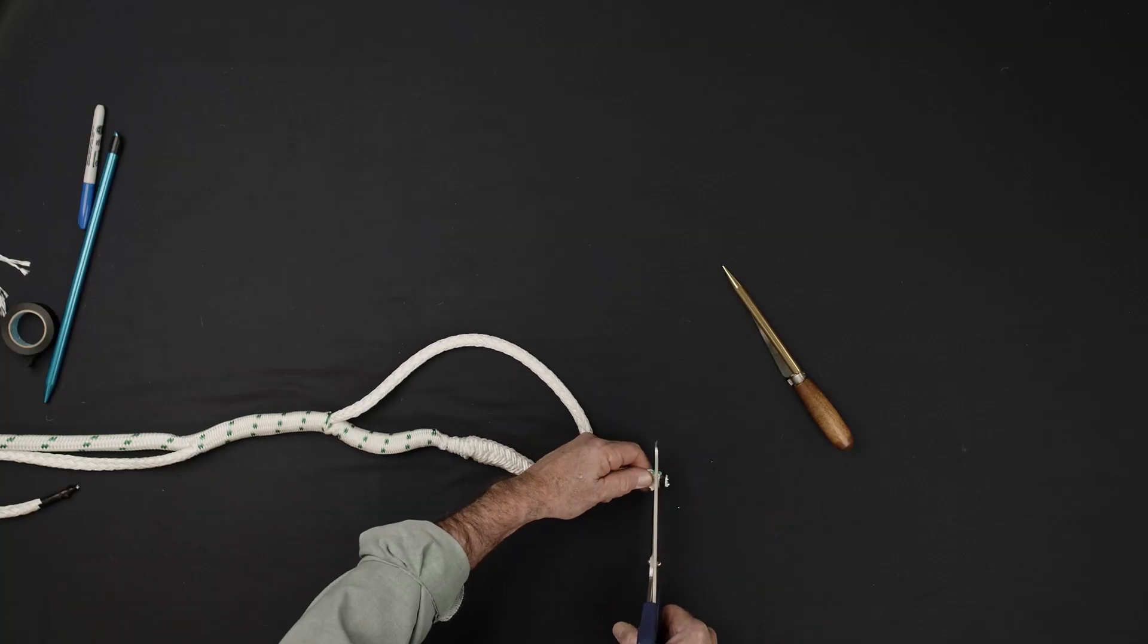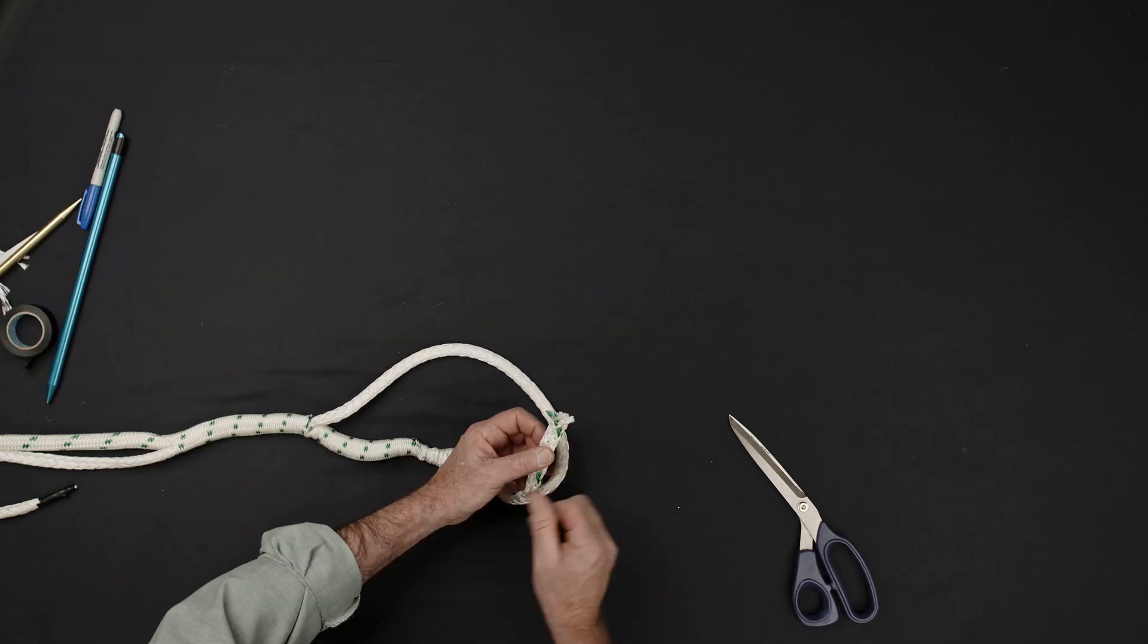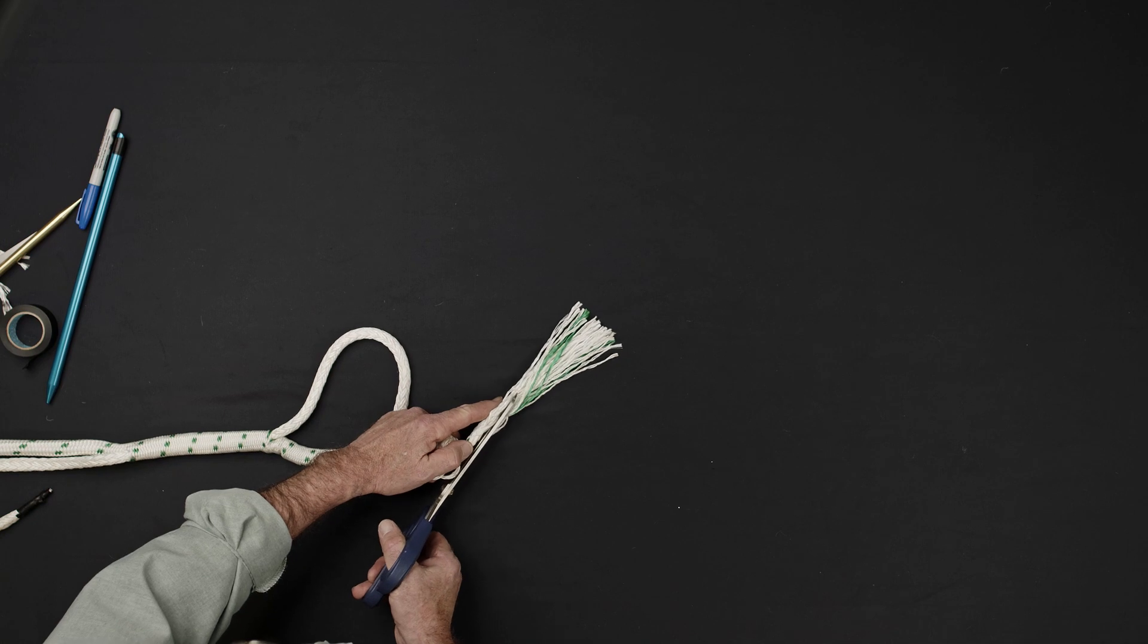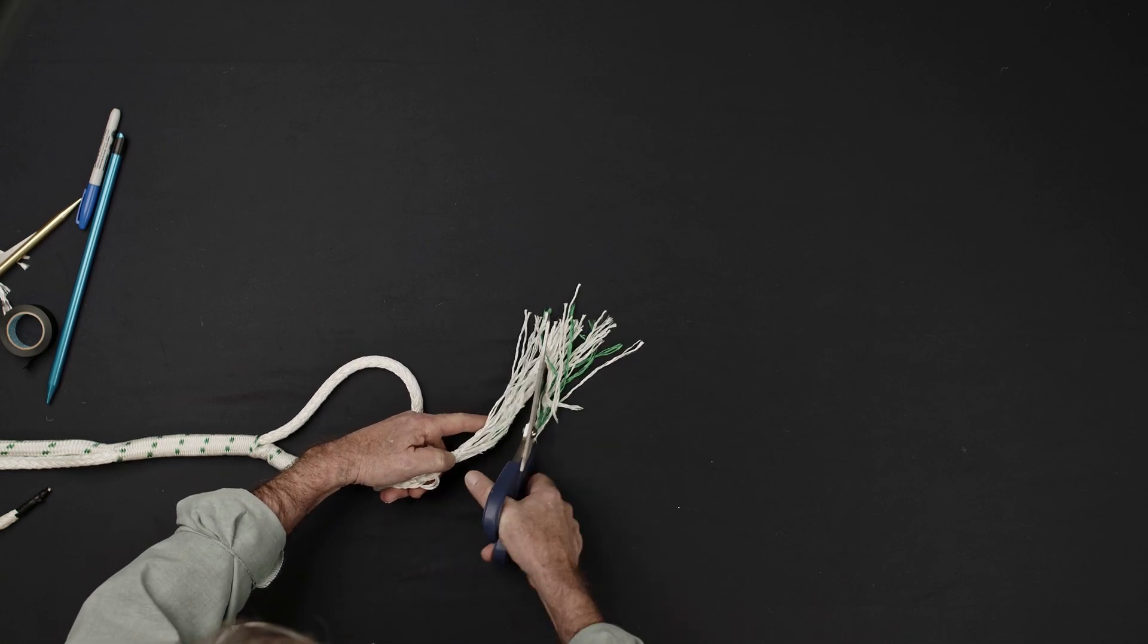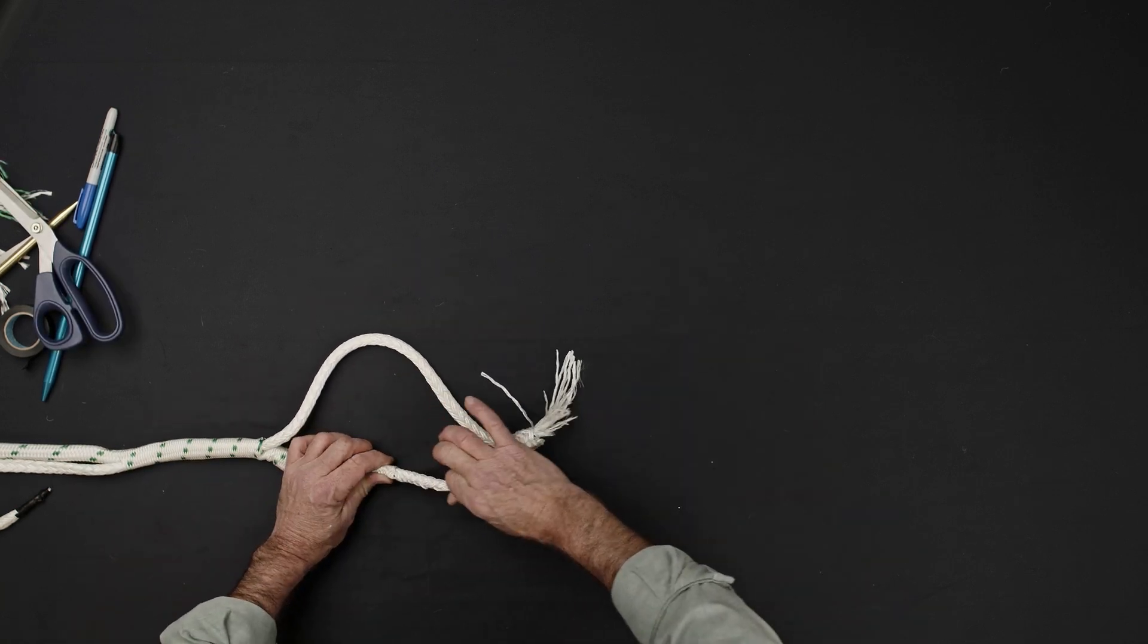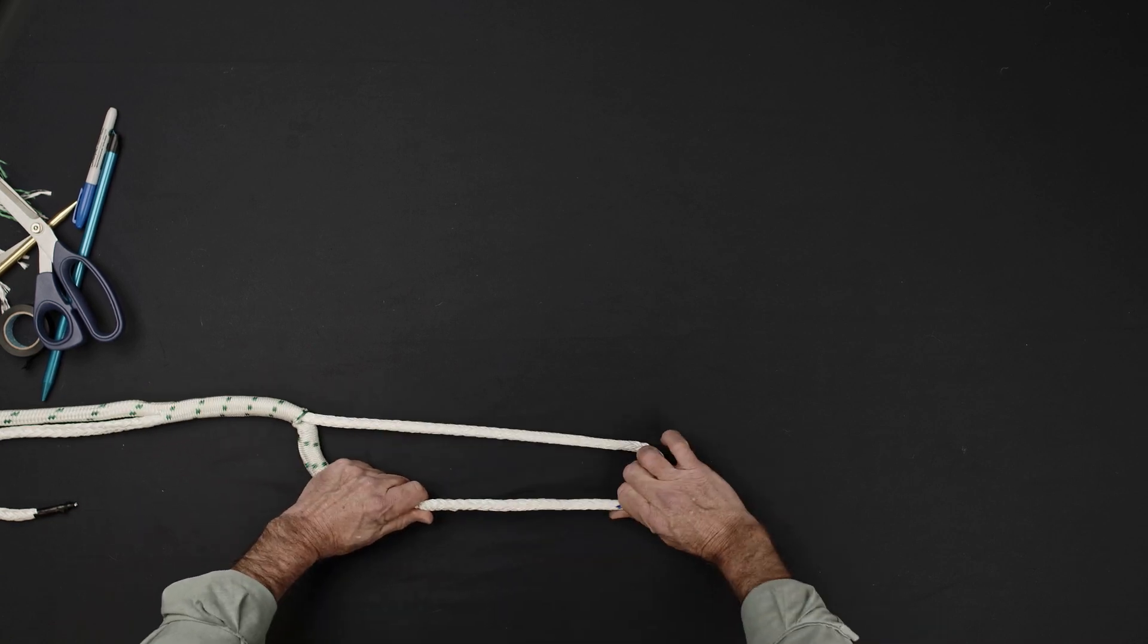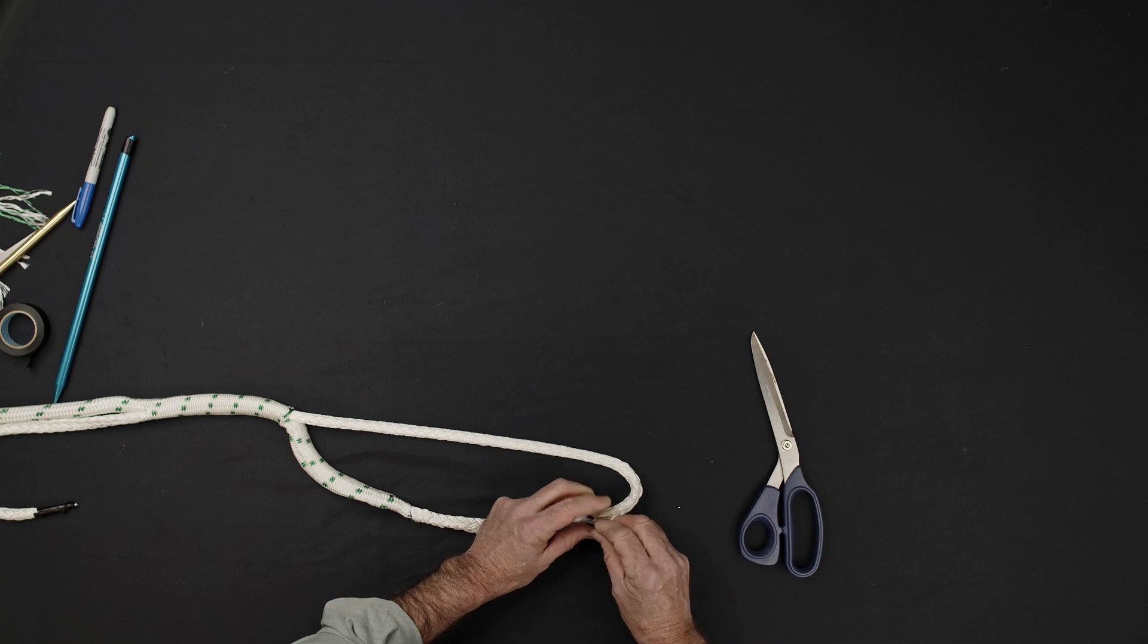Remove the tape from the end of the sleeve. Unravel a short section of the sleeve and cut a gradual taper along its length. Milk the tail of the cover back into the core. If any of the cover remains exposed, trim it off here.